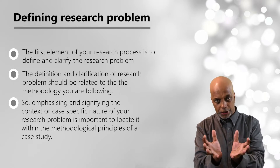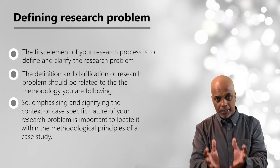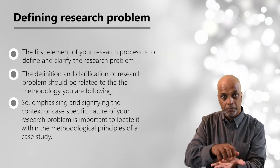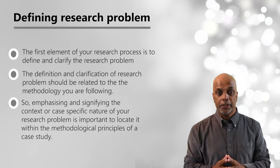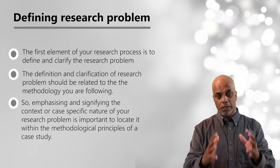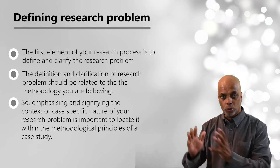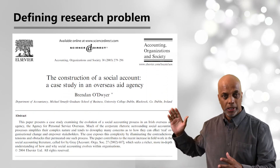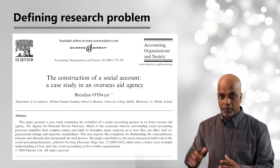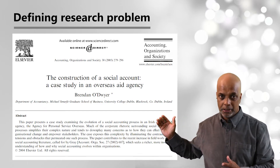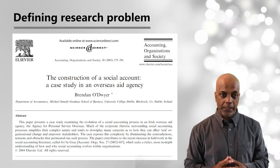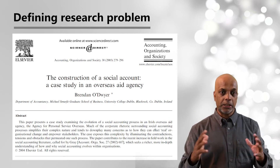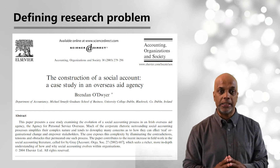You have to spell out your research problem in such a manner that you say your aim is to understand and explore this particular problem in a given particular reality situation. To understand this point better, let's go to an example — a journal paper by Brendan O'Dwyer. This paper was published in Accounting, Organizations and Society, one of the highest ranking accounting journals. The title of the paper is 'The Construction of a Social Account: A Case Study in an Overseas Agency.'